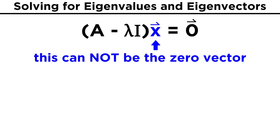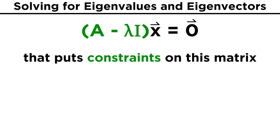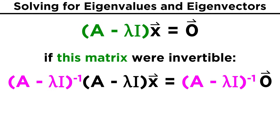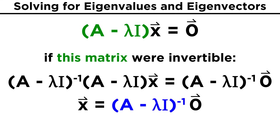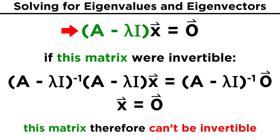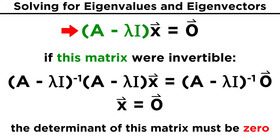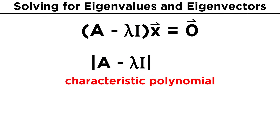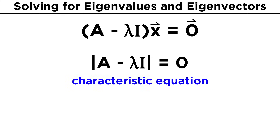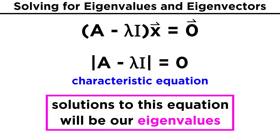Now we want non-trivial solutions to this equation, meaning that X can't be the zero vector. If this matrix A minus lambda I were invertible, then we could multiply both sides by its inverse and get X equals zero. To avoid this situation, A minus lambda I can't be invertible, and therefore the determinant of this matrix must be zero. The determinant of A minus lambda I will form a polynomial in lambda often referred to as the characteristic polynomial, and the equation formed when the determinant equals zero is called the characteristic equation. The solutions to this equation will be our eigenvalues.